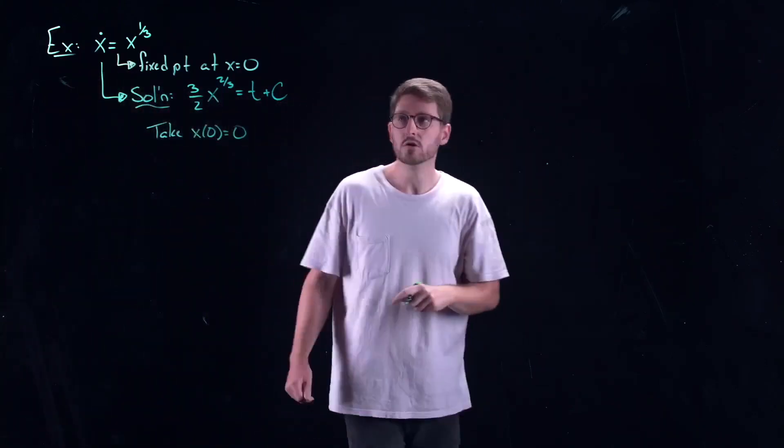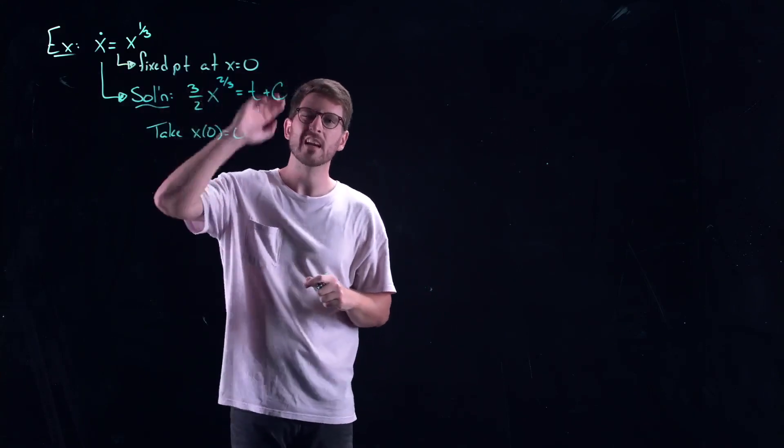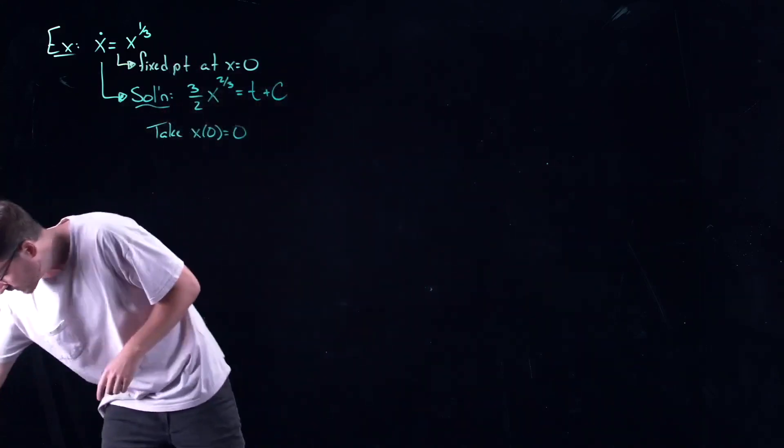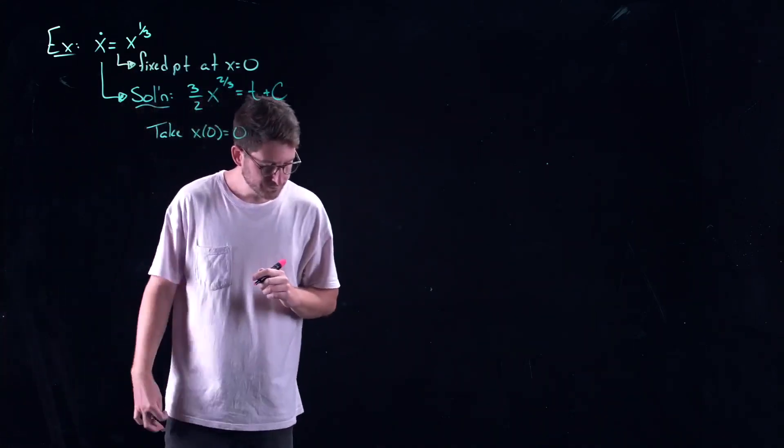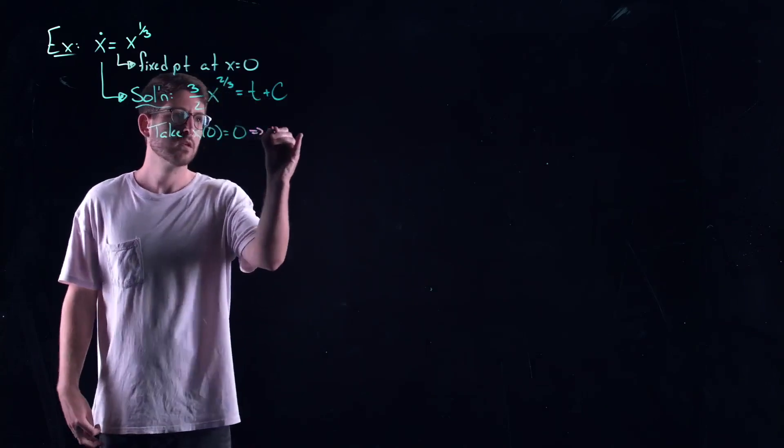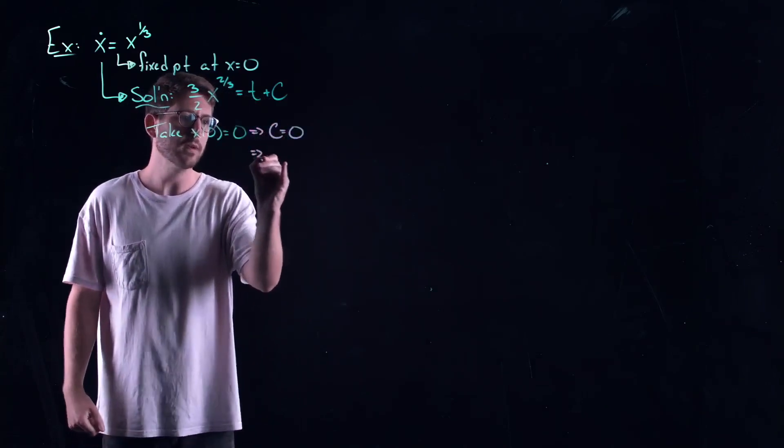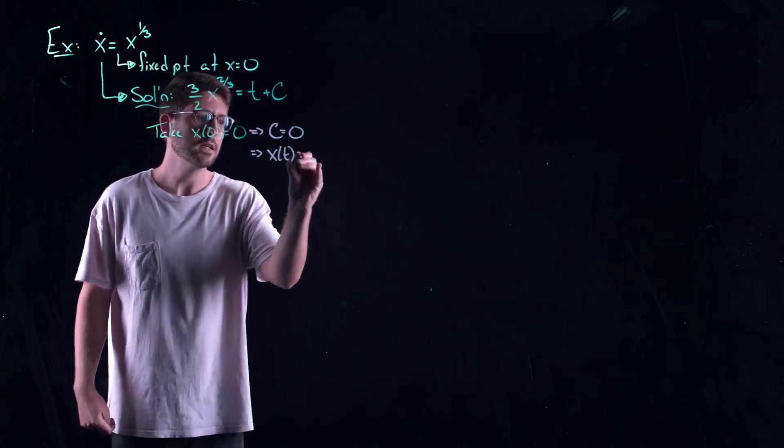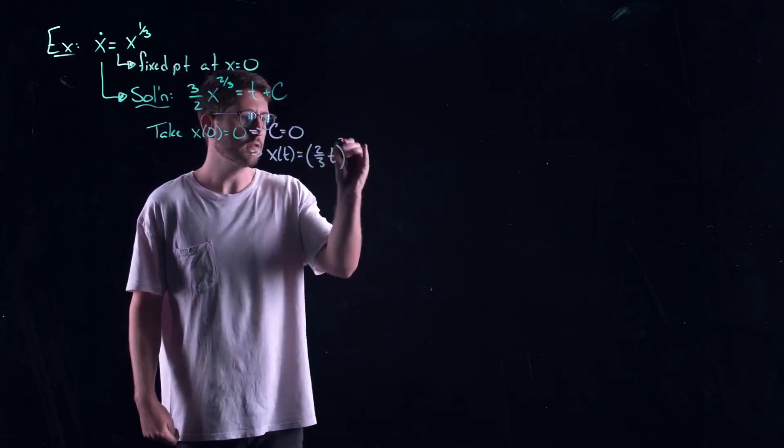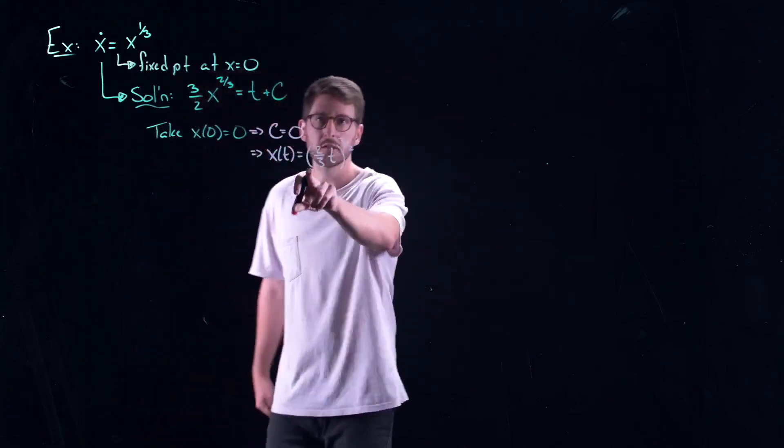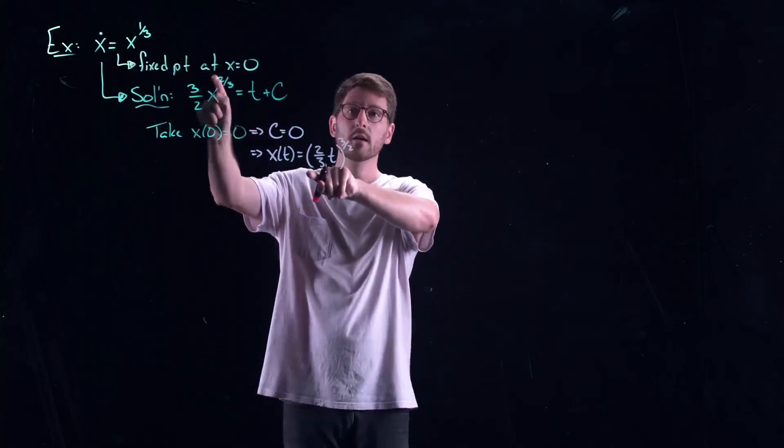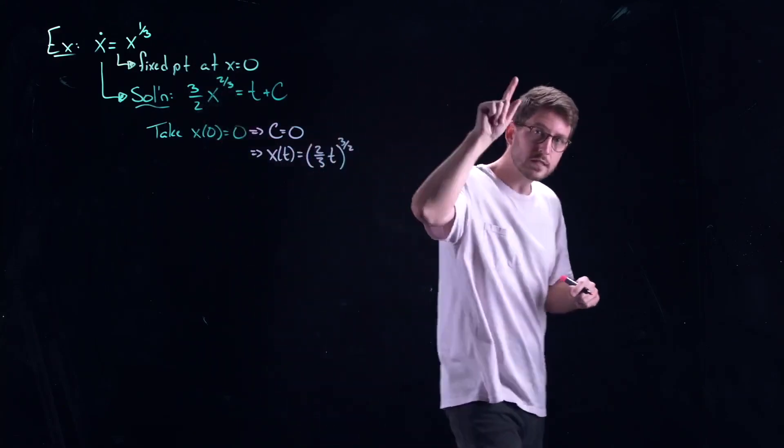First of all, my geometric approach told me that if I take x of zero equal to zero, I'm at a fixed point and I stay at x equal to zero always. But in this case, I would get c is equal to zero, which would give me x of t is equal to two-thirds t to the three over two. This function is not always zero. This is conflicting information. This gave me two solutions for the same initial condition. One of them is sitting at the equilibrium point for all time.